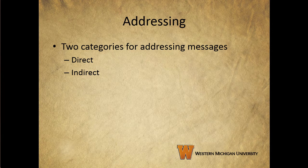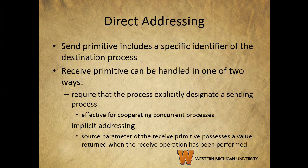There are two categories for addressing messages: direct and indirect. With direct addressing, the send primitive includes a specific identifier of the destination process. The receive primitive can be handled in one of two ways. One possibility is to require that the process explicitly designate a sending process; thus, the process has to know ahead of time from which process a message is expected. This can be effective for cooperating concurrent processes, but in other cases, such as a print server, it's impossible to specify the anticipated source process because a printer-server process will accept a print request message from any other process. For such applications, a more effective approach is the use of implicit addressing, where the source parameter of the receive primitive possesses a value returned when the receive operation has been performed, so the receiving process gets the address of the source process during the receive operation.